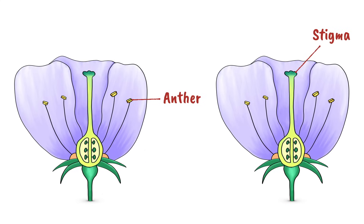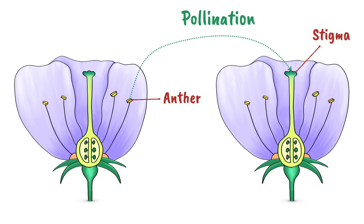Pollen must first travel from an anther to the stigma in a process called pollination. There's more detail on pollination in a separate video — look for a link in the description.